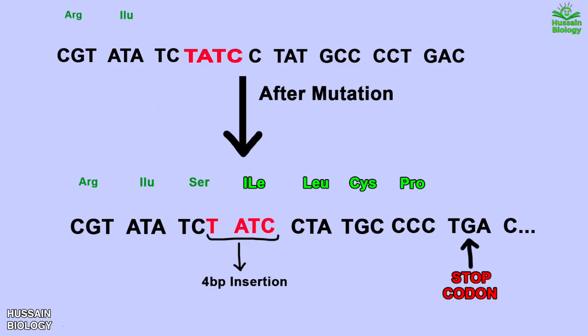So basically it's here where the premature termination of translation will occur without translating exons 12, 13, and 14, thereby producing a truncated or dysfunctional enzyme that leads to Tay-Sachs disease.